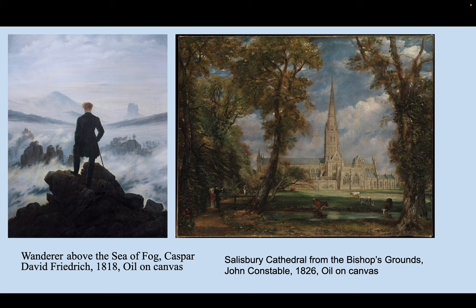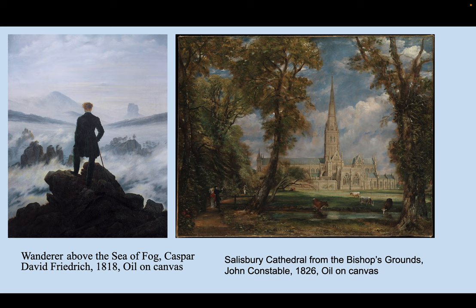These two pieces exemplify the landscape art side: 'Wanderer Above the Sea of Fog' by Caspar David Friedrich, and 'Salisbury Cathedral from the Bishop's Grounds' by John Constable. Wanderer is like the poster boy of Romanticism — the landscape, the use of color, the framing of the subject — it's all meant to make the viewer feel awe and wonder very strongly. On the right, Salisbury Cathedral is meant to be an overly serene, picturesque scene.